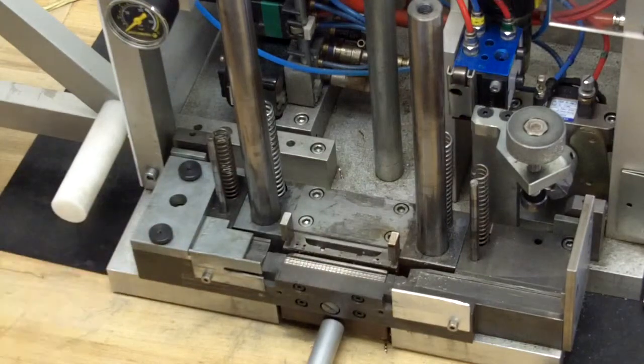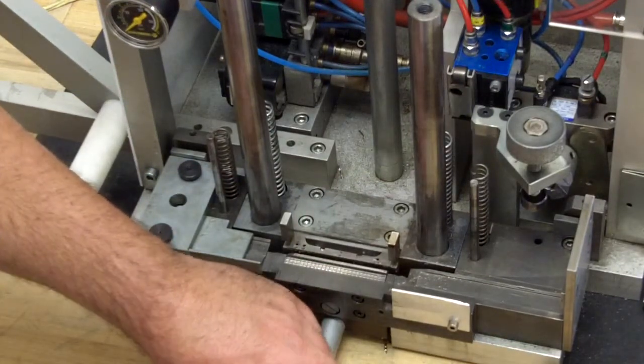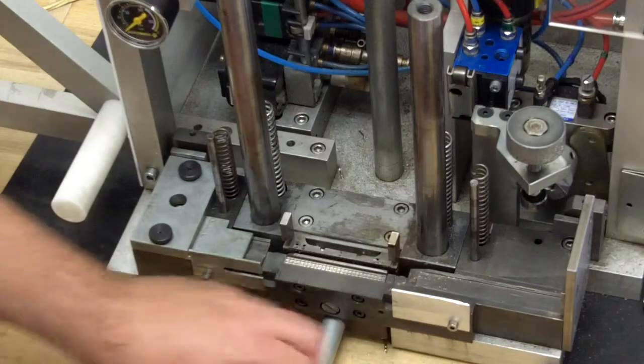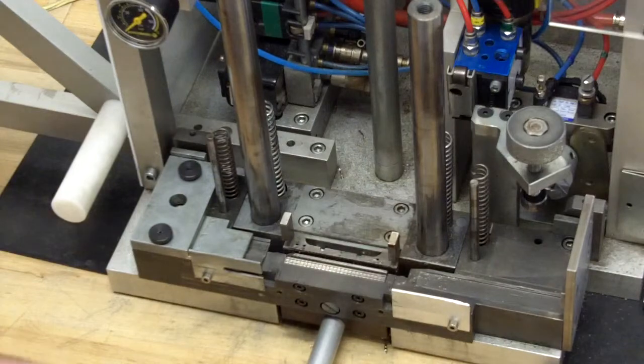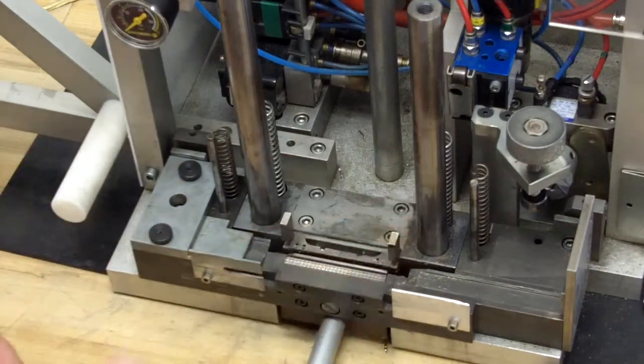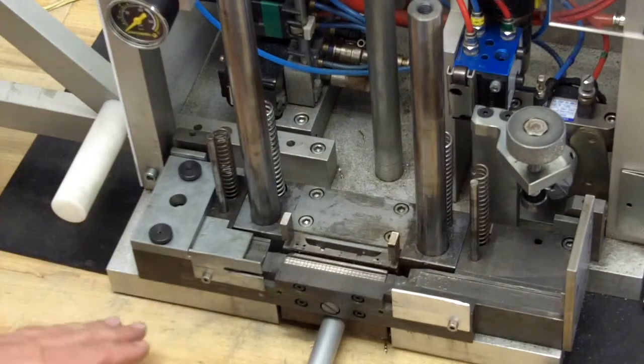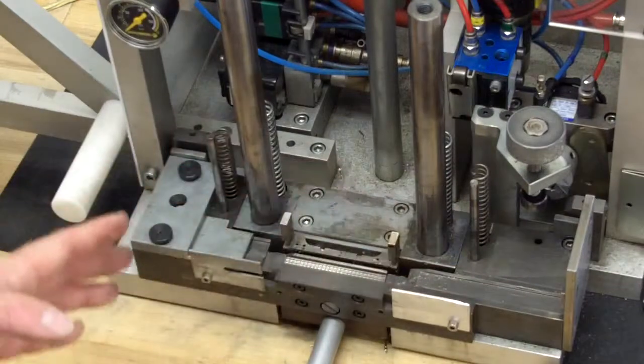With them just slightly loose, we want to adjust the thumb screw in until it hits the machine, and then just make it finger tight. We don't want to put a wrench on it, we don't want to make it real tight. We just want to exert even continuous pressure on the front of the machine. This makes our adjustments to the shims the same on both sides.